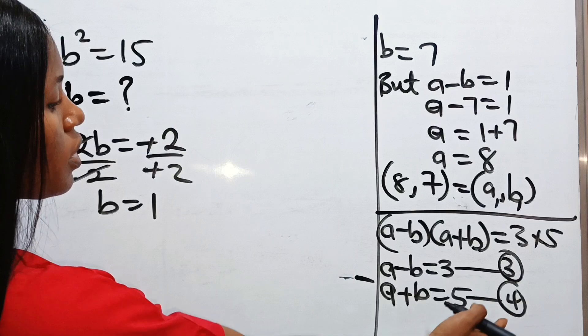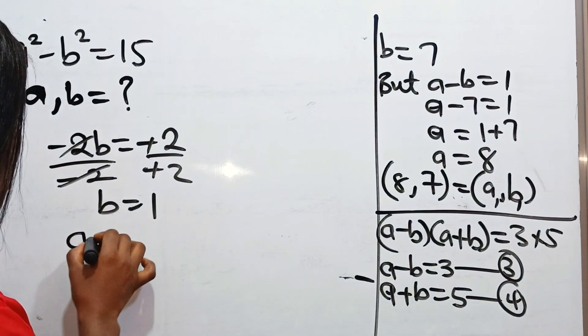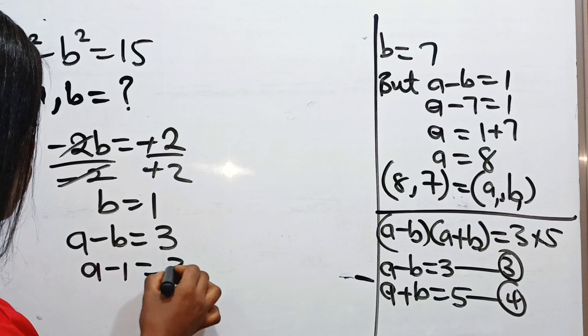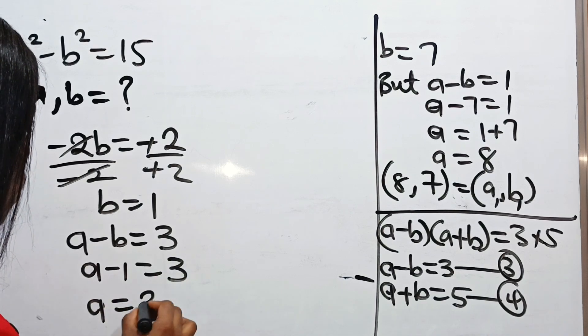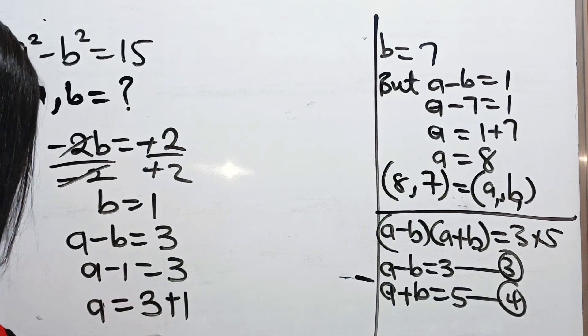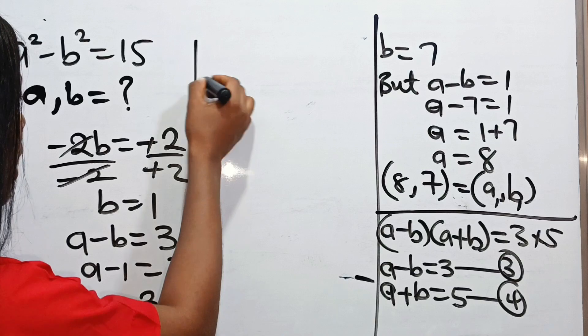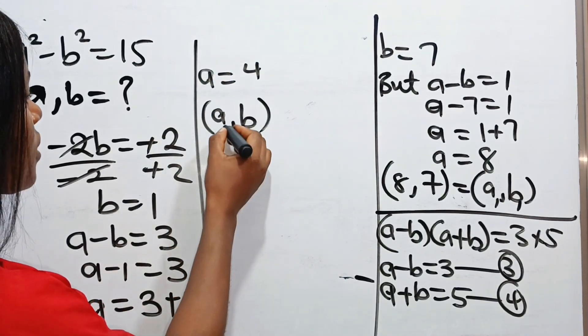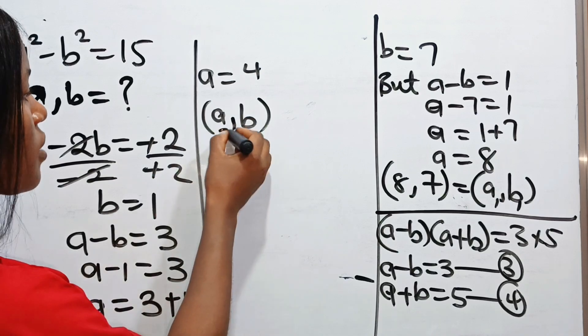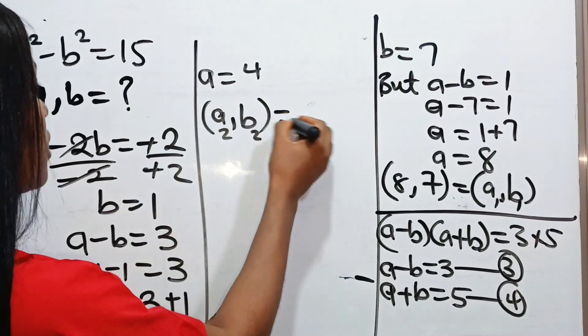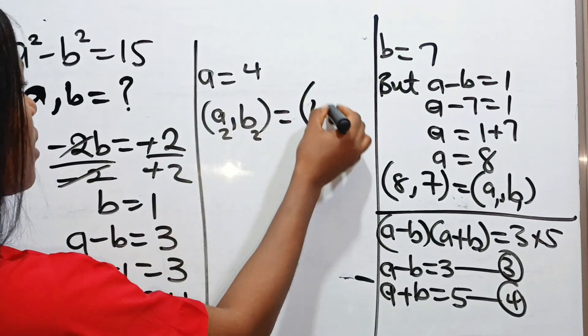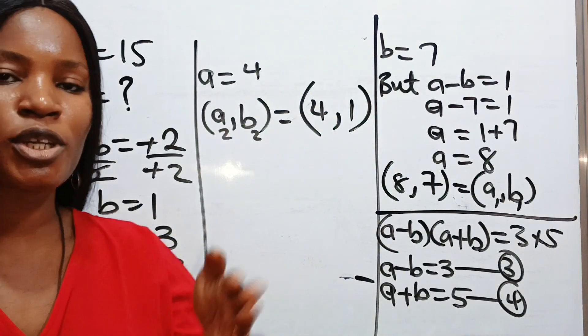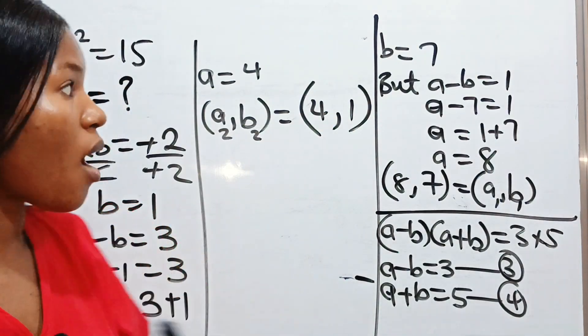Remember from equation 3, a minus b is equal to 3. So a minus 1 is equal to 3. Minus 1 will cross become plus 1. So a is equal to 4. So in this case, a comma b, let's call it a2, b2, is equal to our a is 4 and our b is 1.